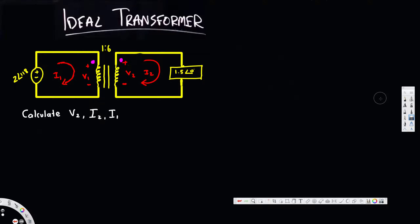In this video we are going to see an example of an ideal transformer. In this particular problem we are asked to find v2, i2, and i1. When we deal with an ideal transformer we always consider two ratios: one of them is v1 over v2, which we equate to n1 over n2, and the other one is i1 over i2, which we equate to n2 over n1.